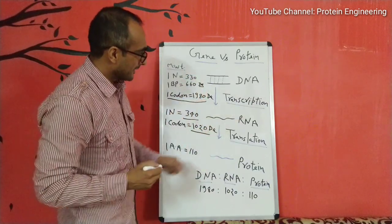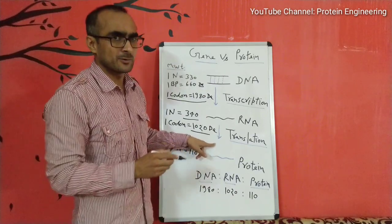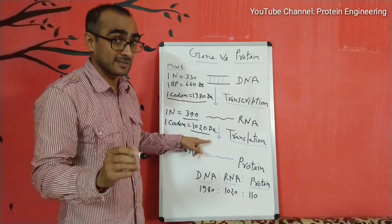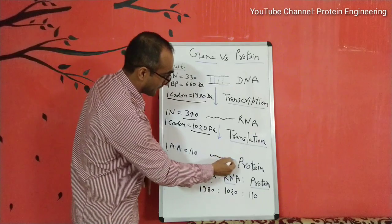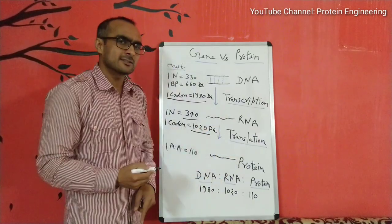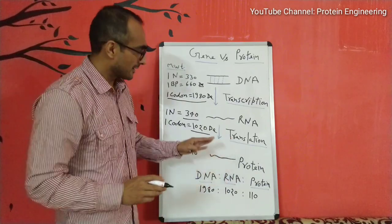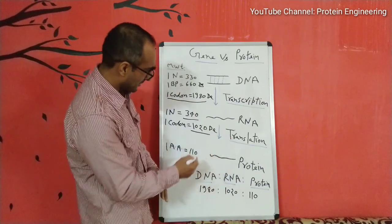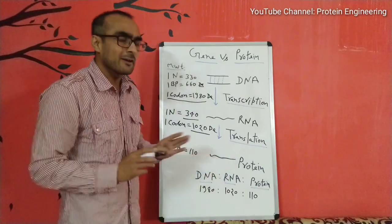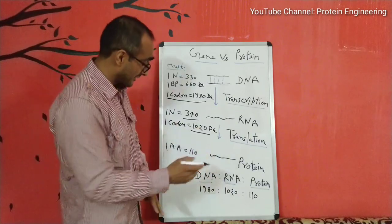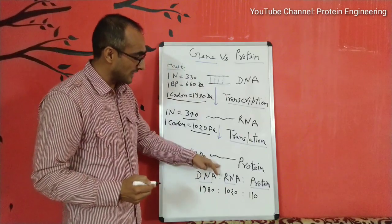If this RNA is messenger RNA, the final product is going to be a protein — an amino acid sequence. When the messenger RNA is formed from the gene, it is converted into an amino acid sequence by a process called translation, in which ribosomes help. In a protein, the average mass of a single amino acid is 110 daltons. So you can see here how the mass changes at each step.